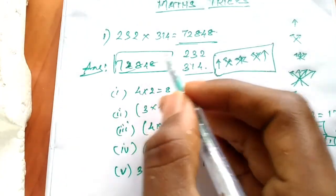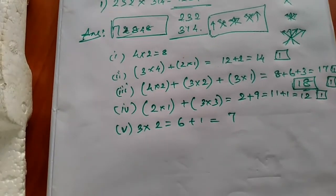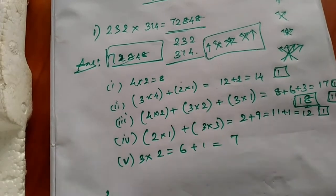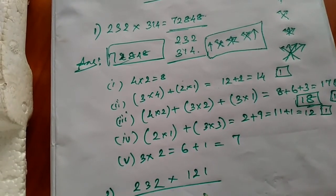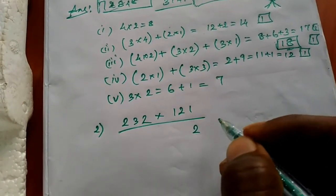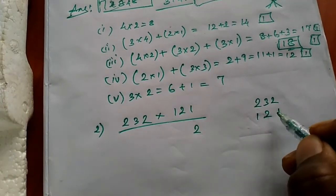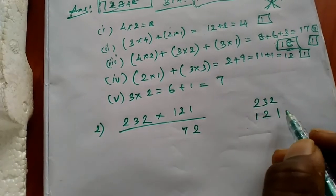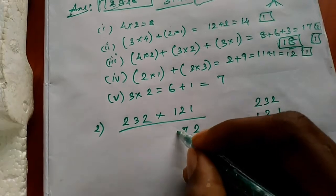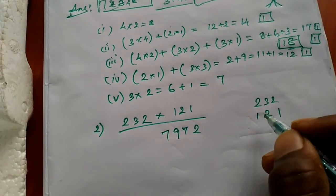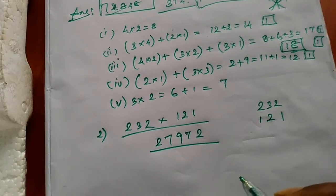If you want to multiply a three-digit number by a two-digit number, let's take another example: 232 into 121. Step one: 2 ones are 2. Next: 3 ones are 3 plus 2 twos are 4 equals 7. Next: 2 ones are 2 plus 3 ones are 3, five plus 2 twos are 4 equals 9. Next: 2 twos are 4 plus 3 ones are 3 equals 7. Finally: 2 ones are 2. This is the answer — very simple.